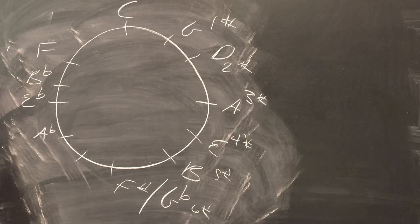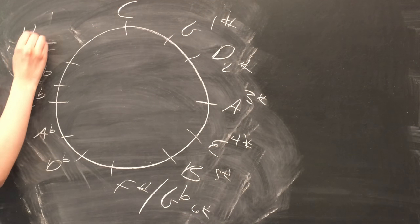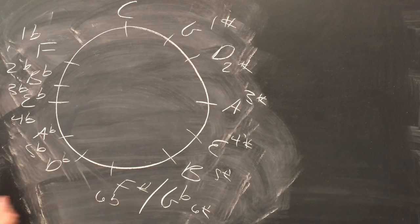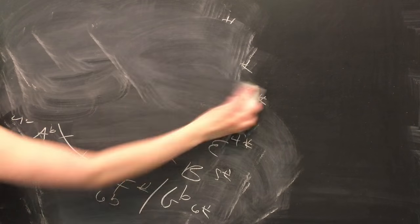We can start back at C and start adding flats just like we did with the sharps. F has one flat, B flat has two flats, and so on. And as you'll note, as we're going down the left side of the circle, we're going down a fifth instead of up a fifth.